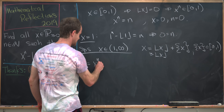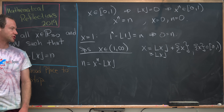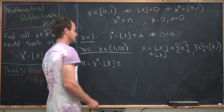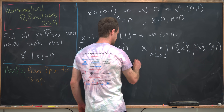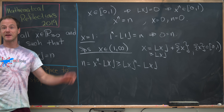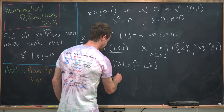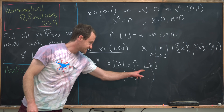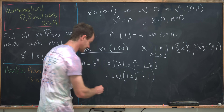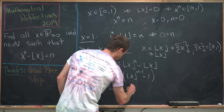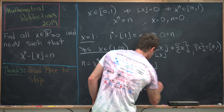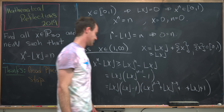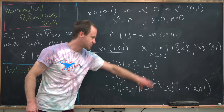We have n equals x to the n minus the floor of x, assuming we have a solution. We simplify so only the floor of x appears on the right-hand side. This is bigger than or equal to floor(x) to the n minus the floor of x, which factors as floor(x) times (floor(x)^(n-1) minus 1). That expression has a standard factorization: floor(x) times (floor(x) minus 1) times (floor(x)^(n-2) + floor(x)^(n-3) + ... + floor(x) + 1).